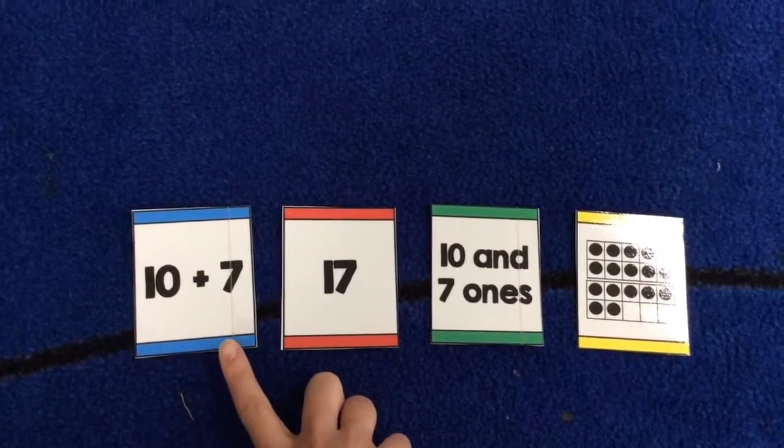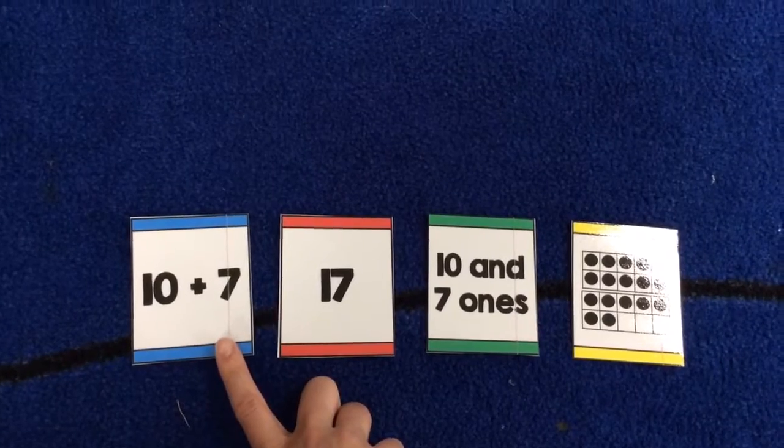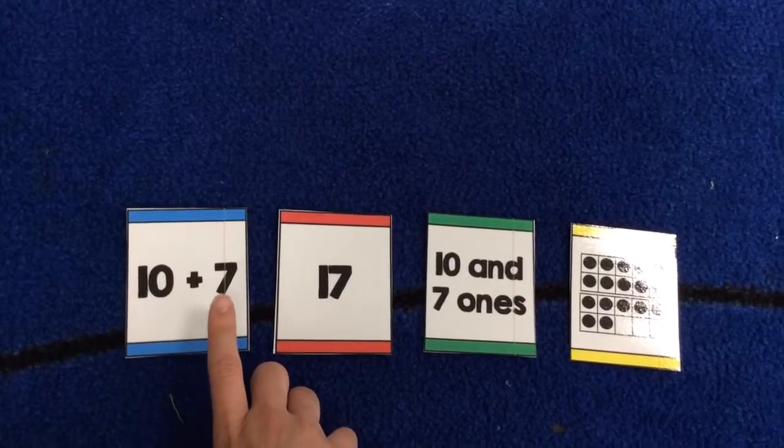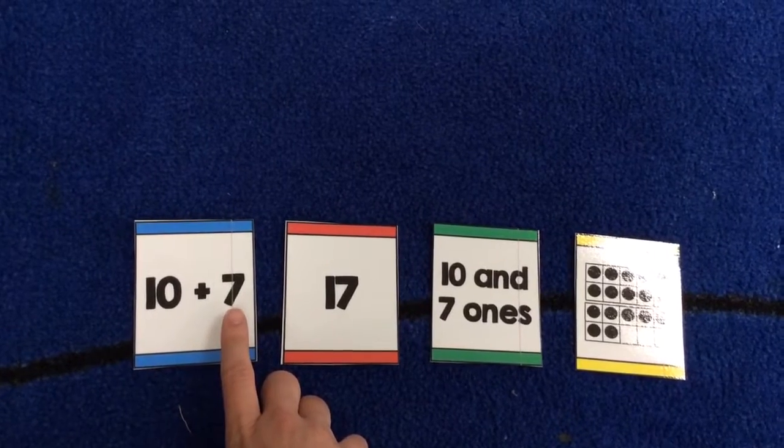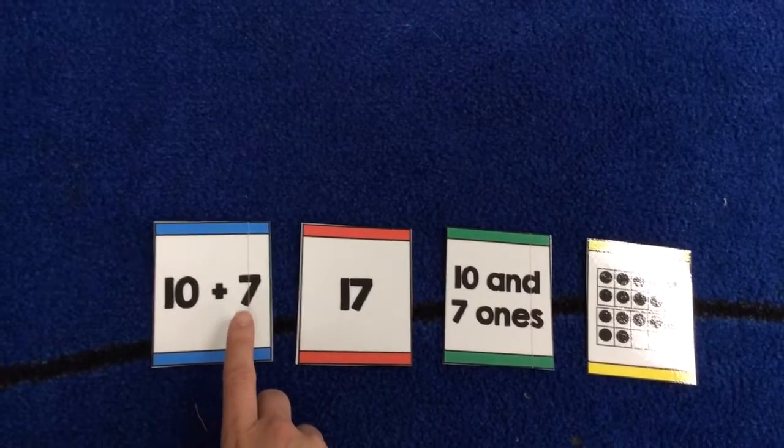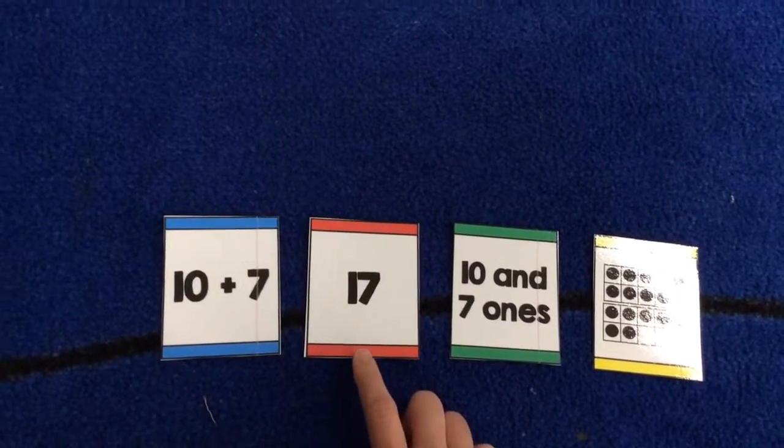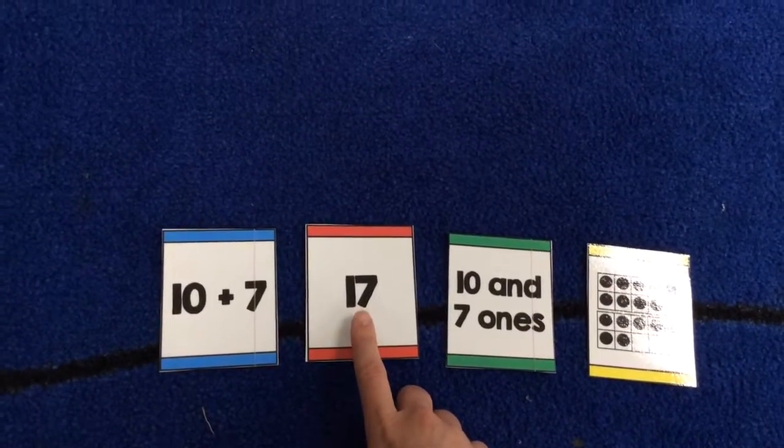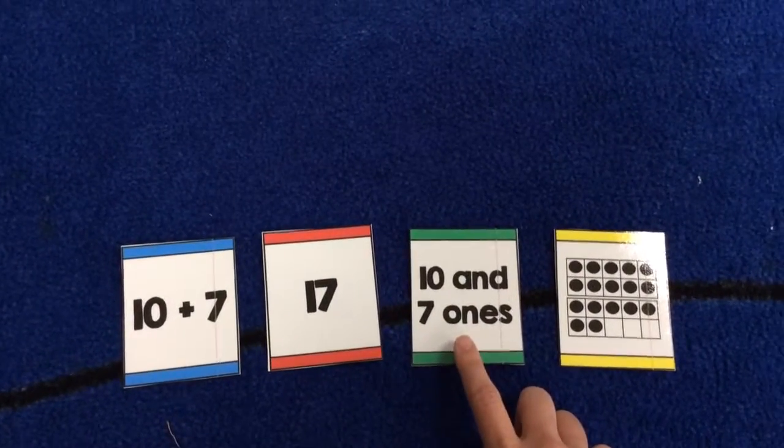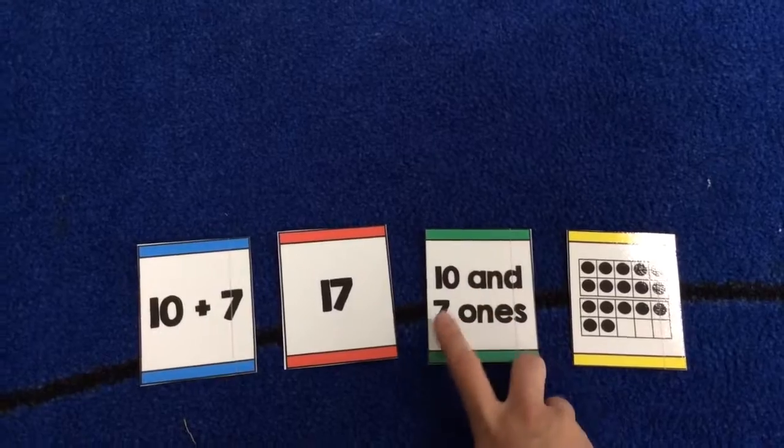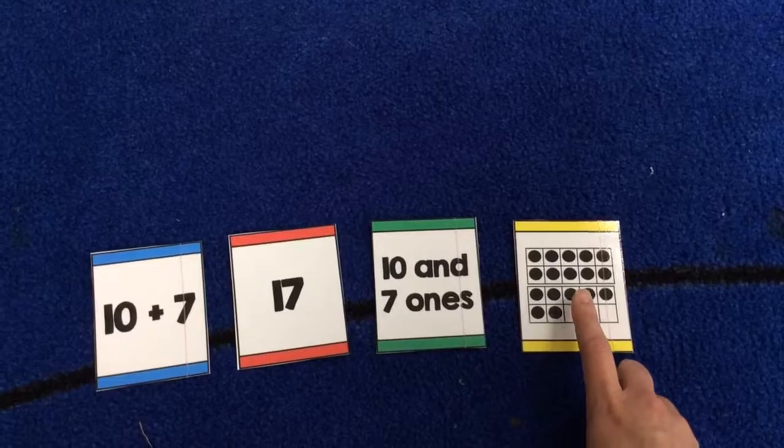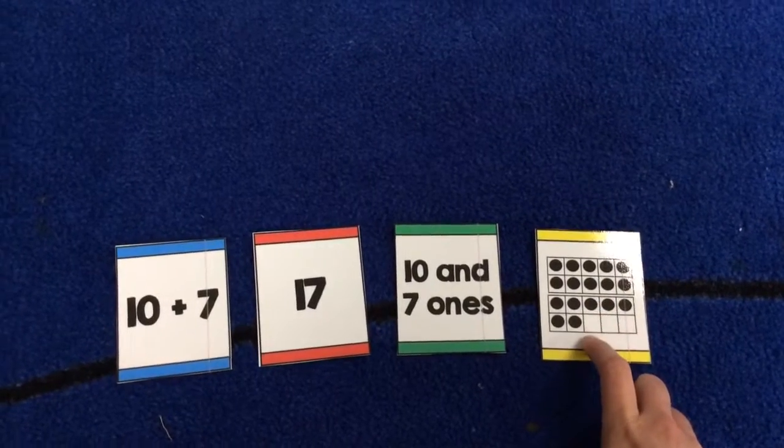The blue cards are showing the expression 10 ones plus how many more ones. So for the numeral 17, this is 10 plus 7. Your red cards are showing you the numeral 17. Your green cards say 10 and 7 ones. And then the yellow cards are showing you counters in 10 frames.